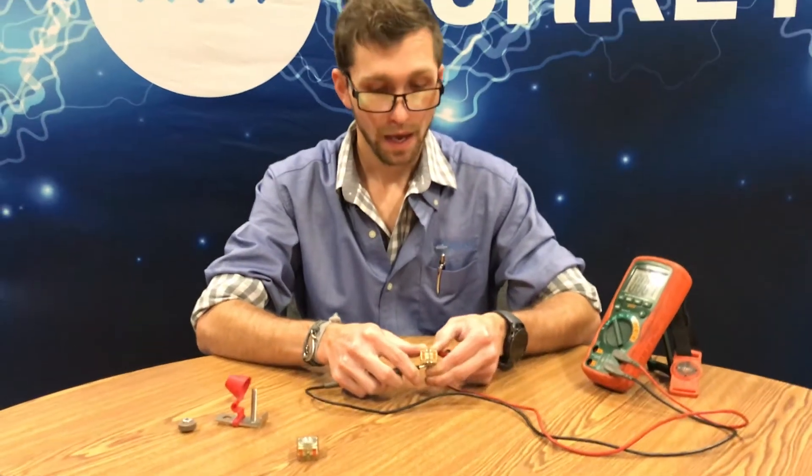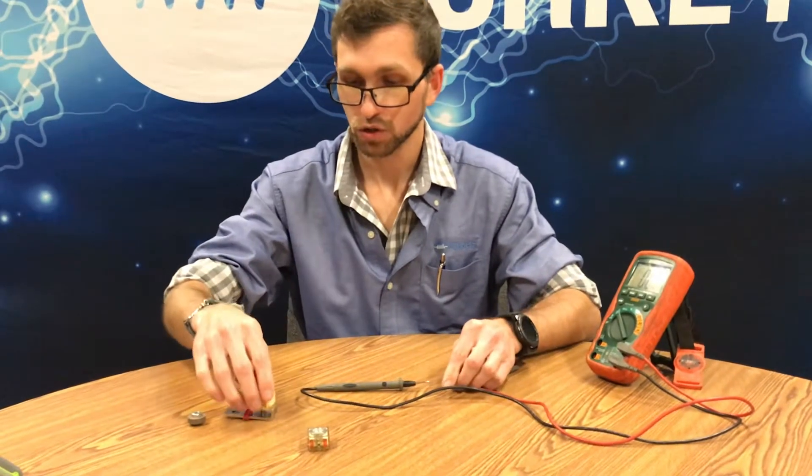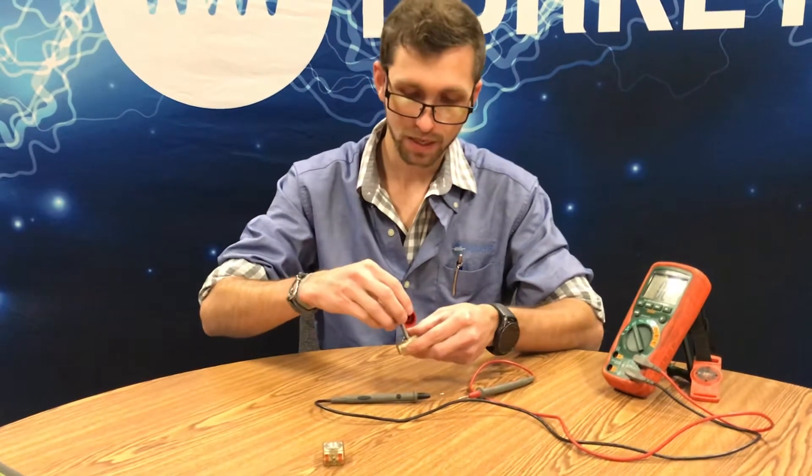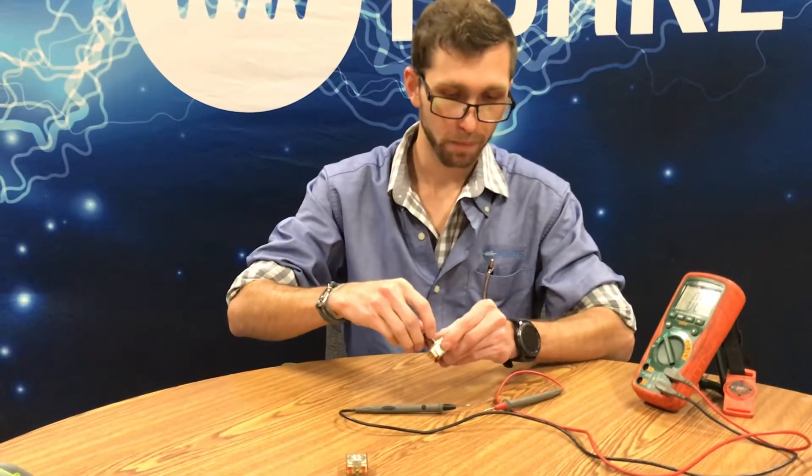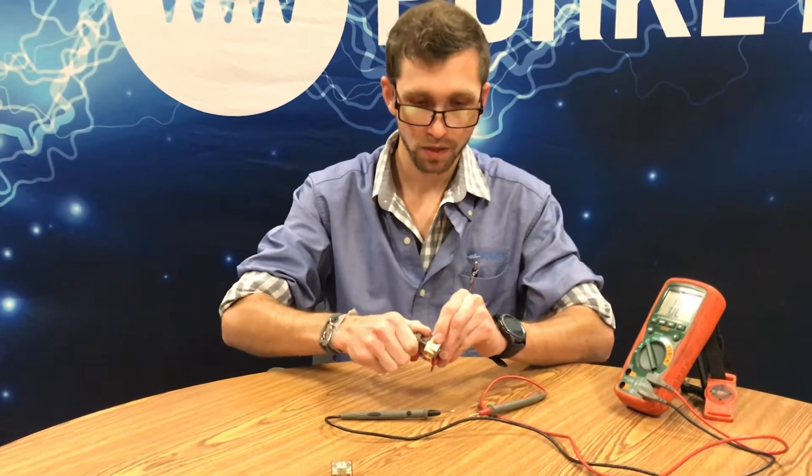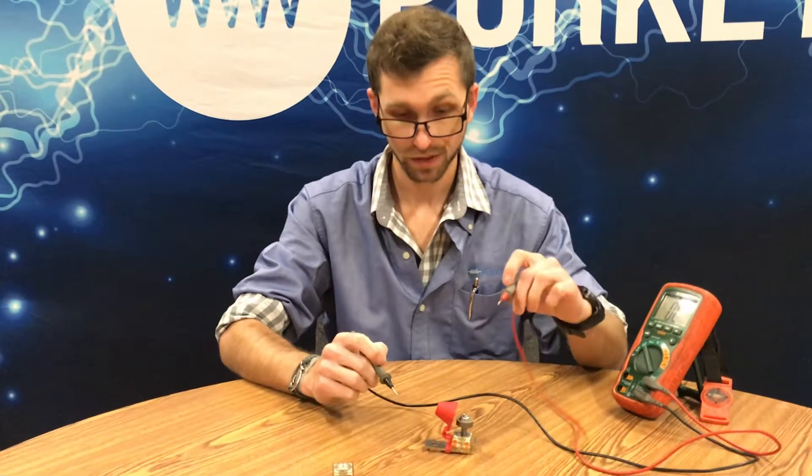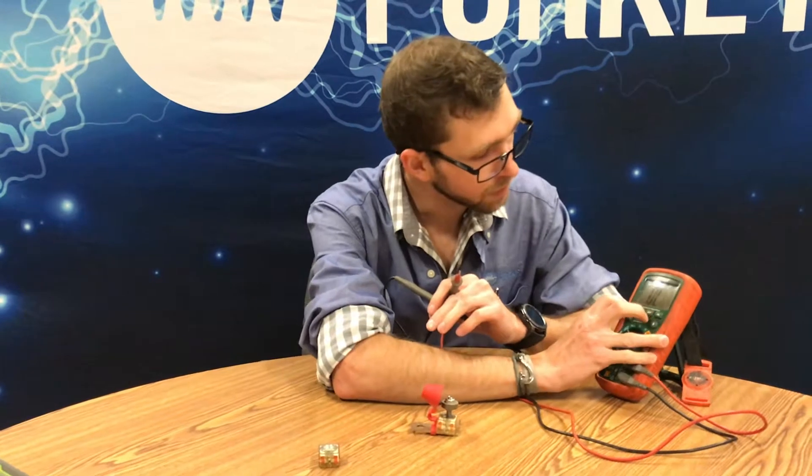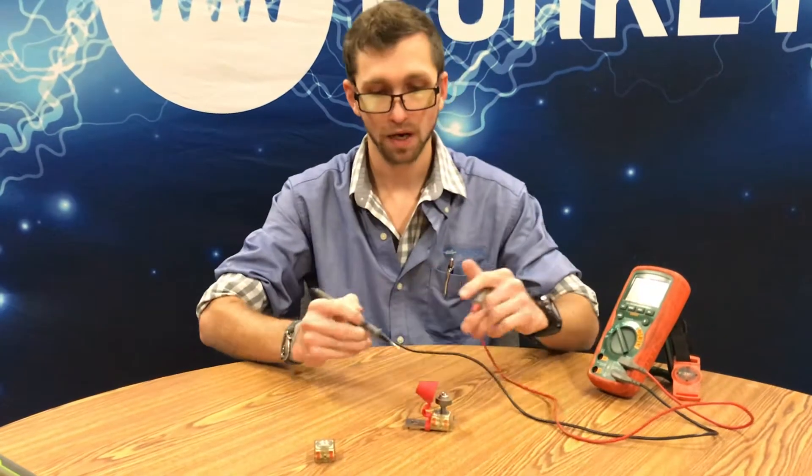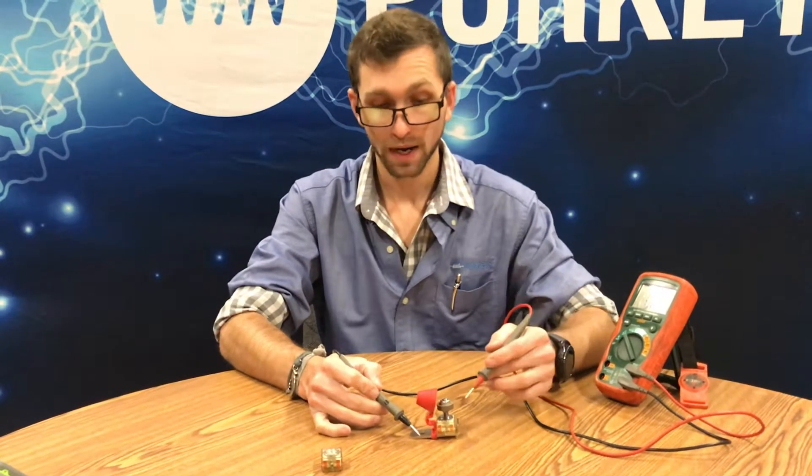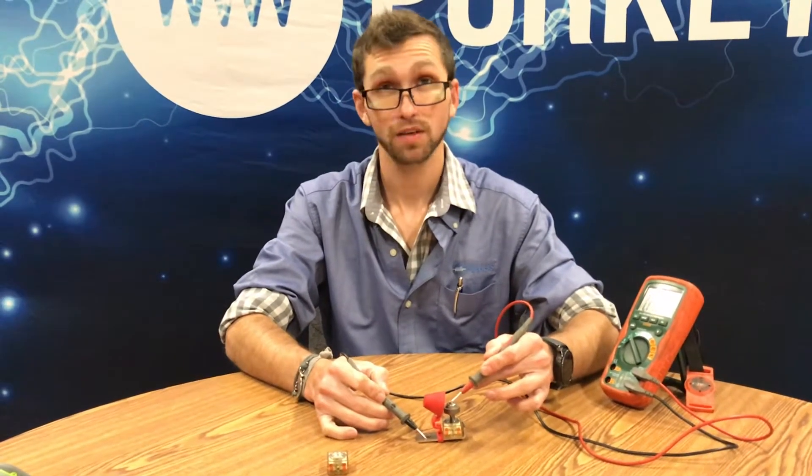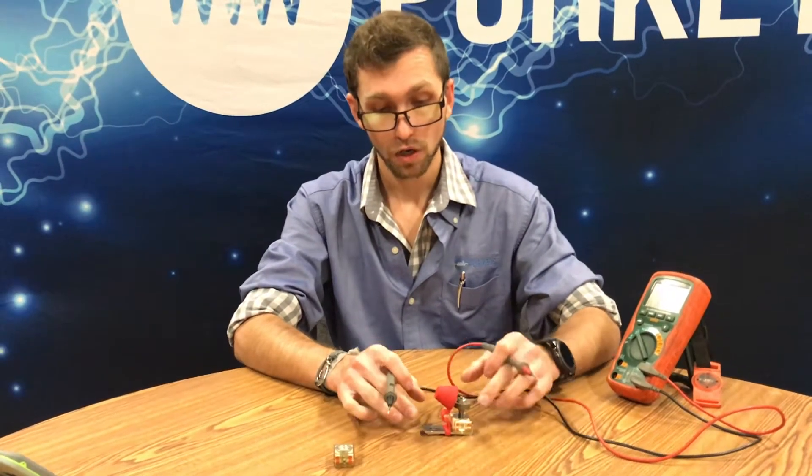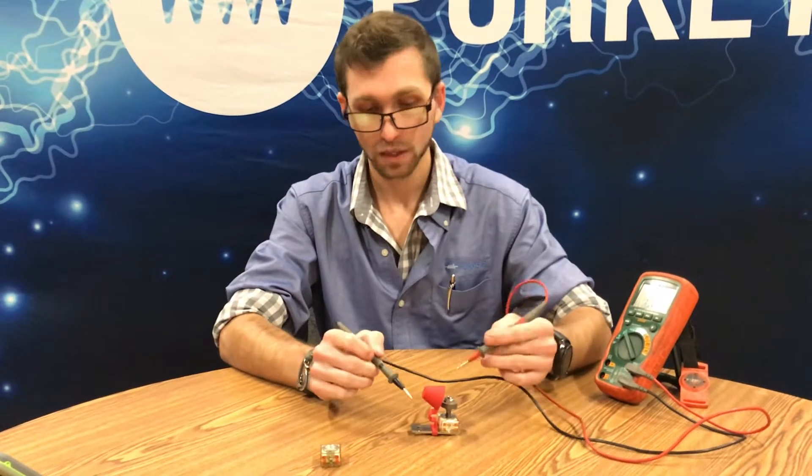If you wanted to check it without it being disconnected from the batteries, this is where it gets tricky. A lot of people want to use their continuity checker and go from the bracket itself to the top, and that's going to give you nothing. That's just basically reading the continuity from your positive lead to your negative in this bracket.